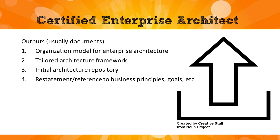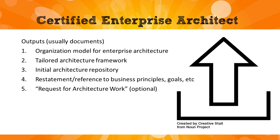Output four is any restatement of the business principles, goals, and drivers. Business principles might be vague or confusing at a high level, and as an architect you can restate them in a way that means the same thing but is clearer for architecture work. Output five is the request for architecture work — similar to a statement of work in technology projects. Output six is the governance framework, which includes document storage, log files, project plans, decisions, and principles.